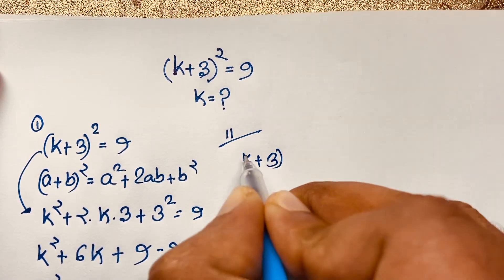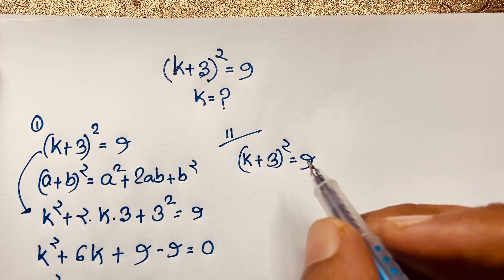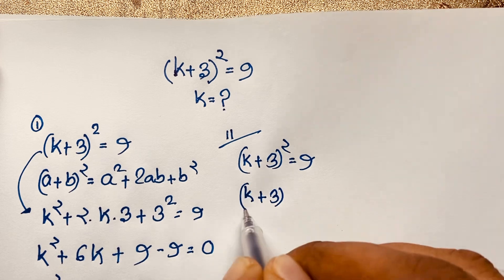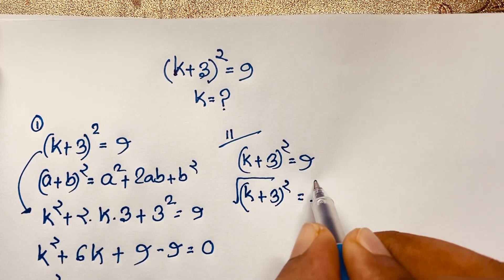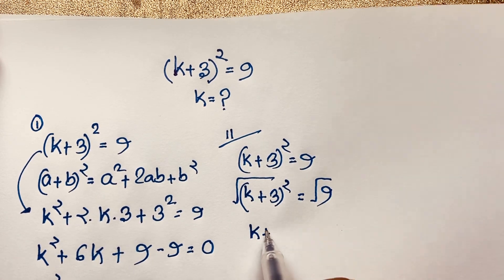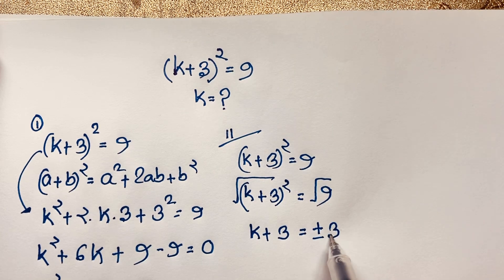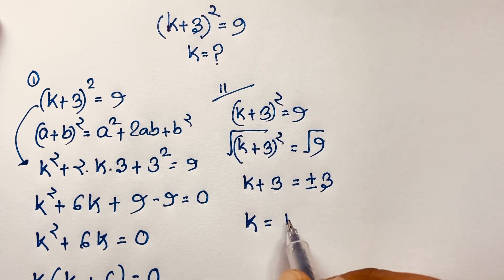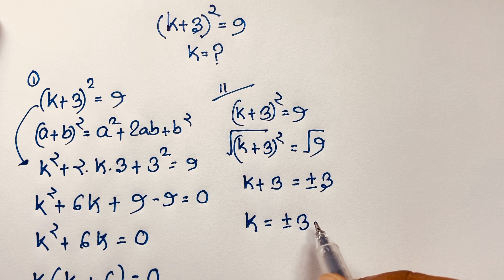Our question is (k + 3)² = 9. Now at this moment I use square root on both sides. The square cancels, giving k + 3 = ±3.